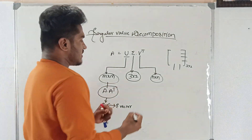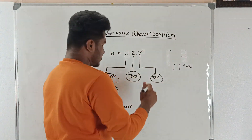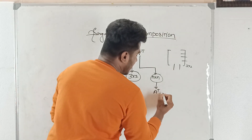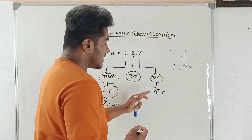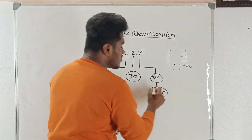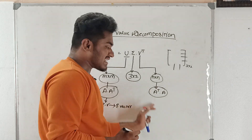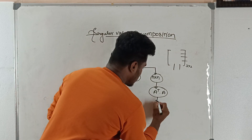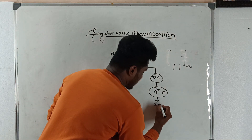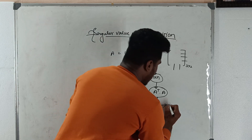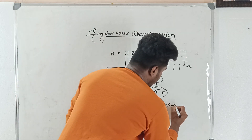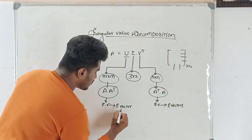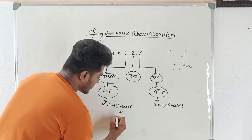V transpose is obtained by computing A transpose times A. For this matrix also, we compute the eigenvalues and then compute the eigenvectors in the same way. The obtained eigenvectors must then be normalized.